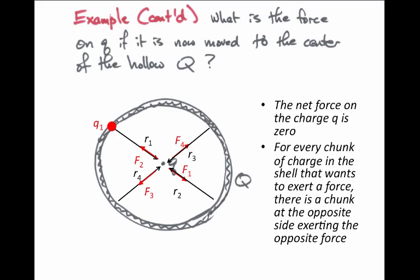For every chunk of charge exerting a force on little q at the center, there is always a chunk of charge on the opposite side of the ball at equal distance, exerting an equal and opposite force, so the net force is always zero. This analysis extends even to the case where the charge is placed off center inside the big ball. To answer this kind of question we again used the principle of superposition, considering the big ball of charge as the sum of many little pieces.